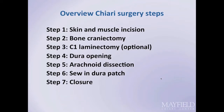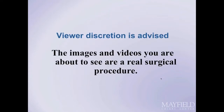There are seven basic steps: skin and muscle incision, removal of the bone at the base of the skull, removal of the spine bones if necessary, opening of the dura, arachnoid dissection, sewing in of a patch, and closure in a standard fashion.